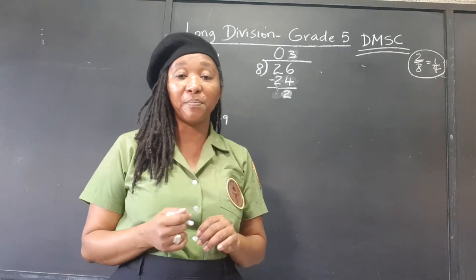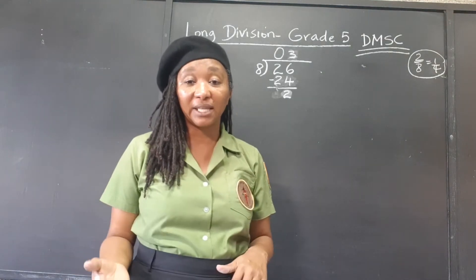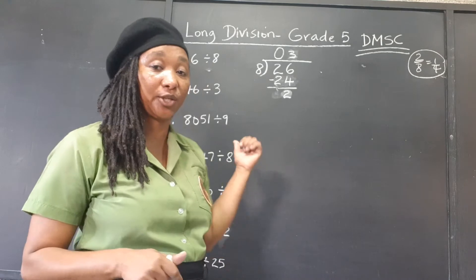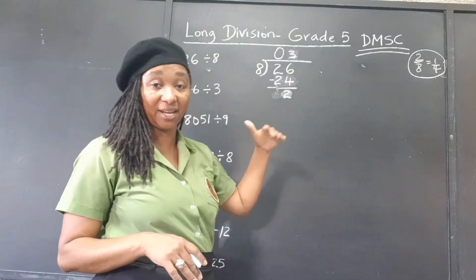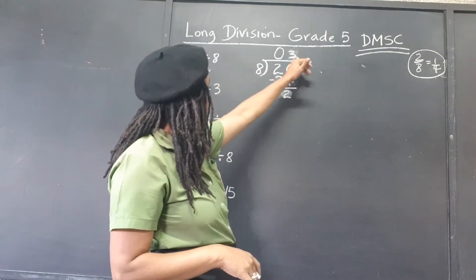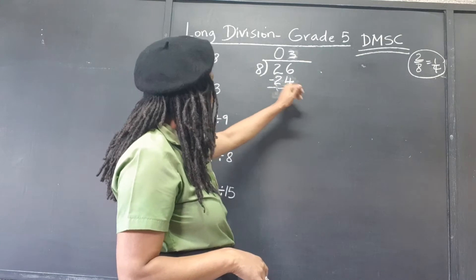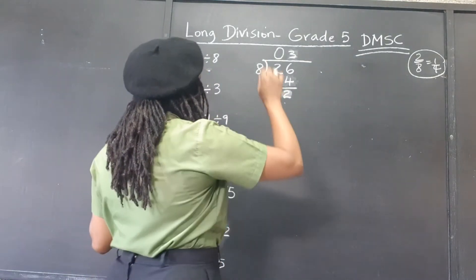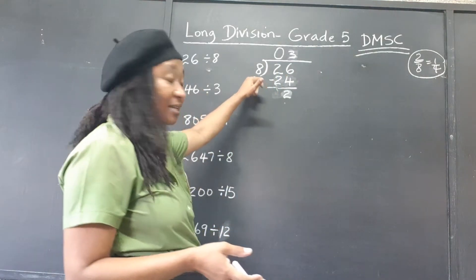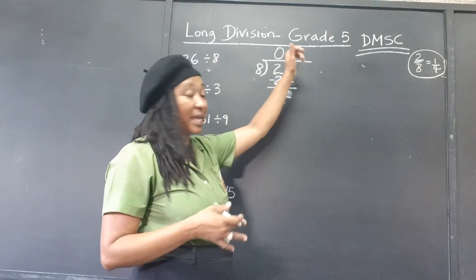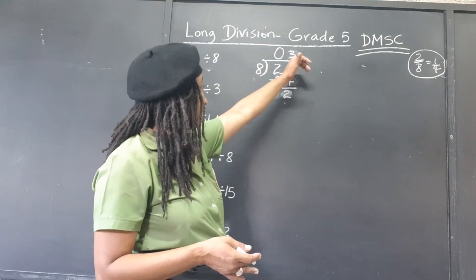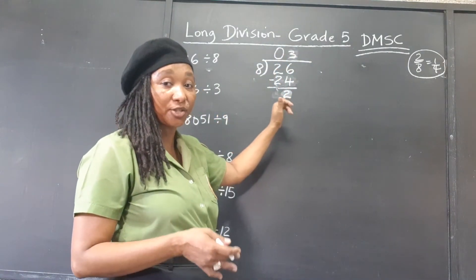Whenever you're dividing, if you end up with a remainder that's more than the divisor, that's a key that you made a mistake — go back and check. So 8 goes into 26 three times; 3 times 8 is 24; and when we subtract we get 2. The dividend is 26, the divisor is 8, the quotient is 3, and the remainder is 2.